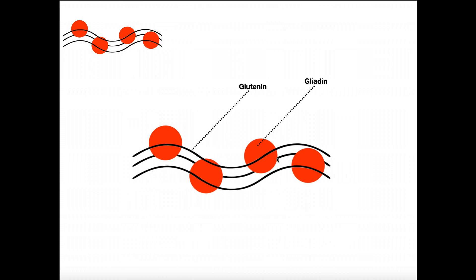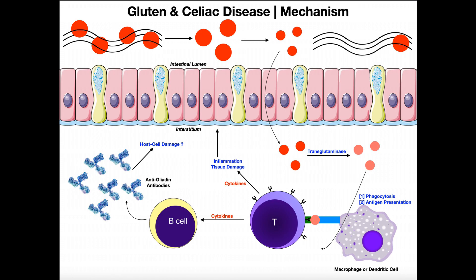Now, what happens when we consume anything with gluten? Here we have the wall of the small intestine, where most of this process is going to occur. At the top is the intestinal lumen — the passageway for food. When you eat something and it goes down your esophagus, through the stomach, and through the small intestine, that big tunnel of your GI tract is the lumen.